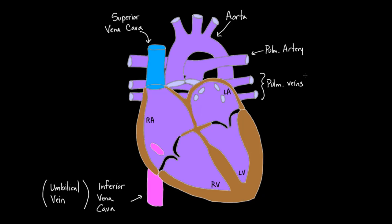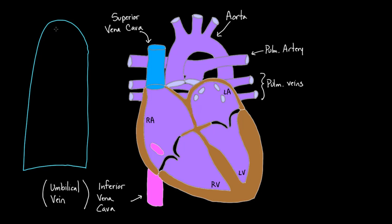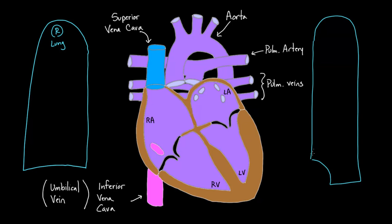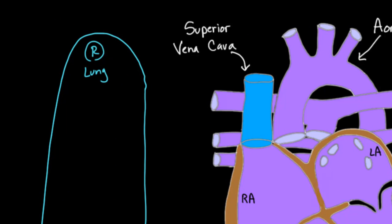Now let's think about what's going on in the fetal heart and how blood flows through. To do that, let me draw some lungs, because this will help inform the path of blood. These are the lungs — this is the right lung and there's one on the left as well, including the cardiac notch. Blood comes into the right lung from the pulmonary artery.